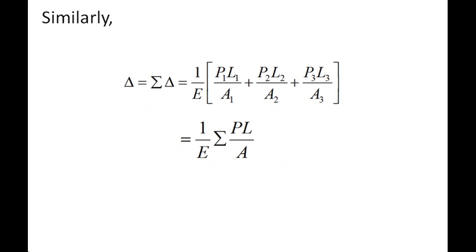Similarly, if the bar of varying section is subjected to various forces both at its ends as well as at intermediate points, we can apply the principle of superposition to find the total deformation. For the total deformation, we compute it by drawing the free body diagram of each individual section.